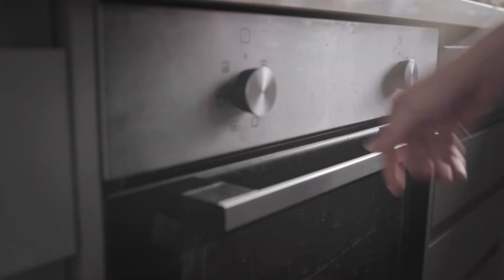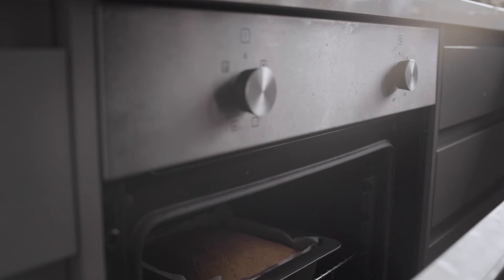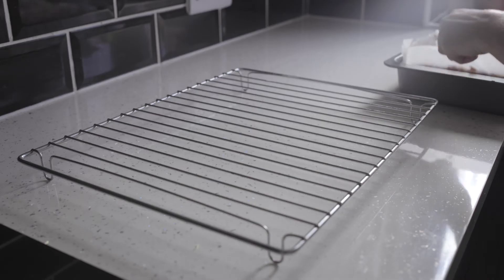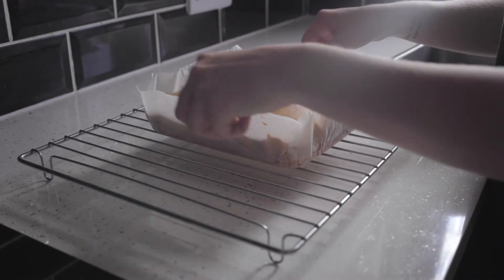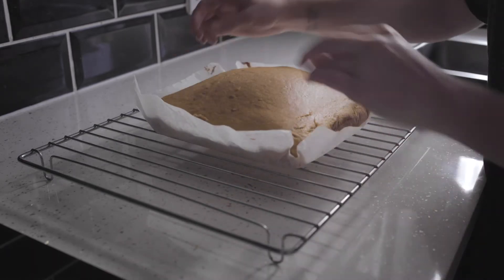After the 30 minutes turn off the oven and leave the door slightly ajar for 10 minutes. This will stop the sponge from sinking so much. After the 10 minutes you can take it out of the tin and put it on a cooling rack.